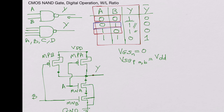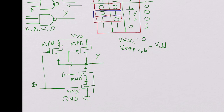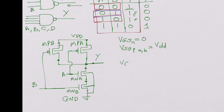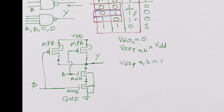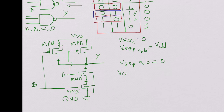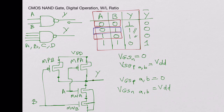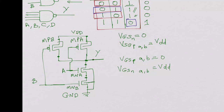Now if both A and B are at VDD: VSG of both MPA and MPB is 0, so both P-channel devices are off — there is no way that Y could go towards VDD. Meanwhile, VGS of both MNA and MNB is VDD, so both are on, which shorts the output Y to ground, giving a logic 0.